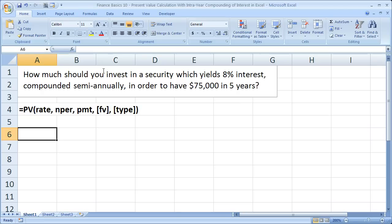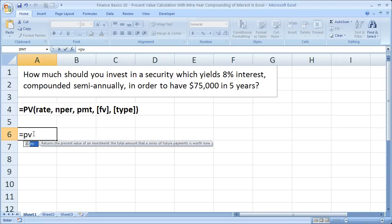Now I've got the present value function listed right here, so you can reference it anytime you need to. All the arguments are listed. But we're not going to go through it step by step this time in too much detail. So, the first thing we need, equals PV, open parentheses.